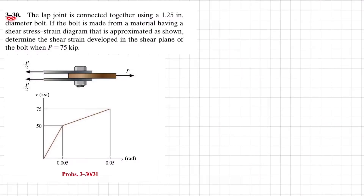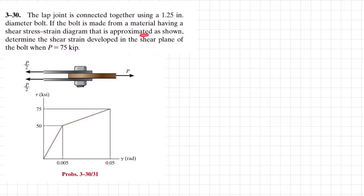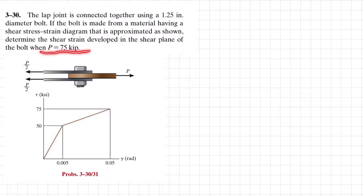Welcome back — Problem 3.30. A lap joint is connected together using a 1.25-inch diameter bolt. The bolt is made from a material having a shear stress-strain diagram approximately as shown. We need to determine the shear strain developed in the shear plane of the bolt, given P is equal to 75 kips. You can see this is a lap joint connected together by this bolt with load P applied, and the shear stress-strain diagram is shown.